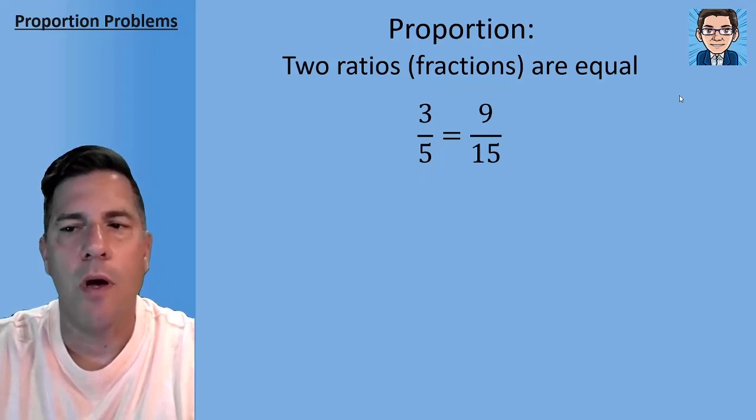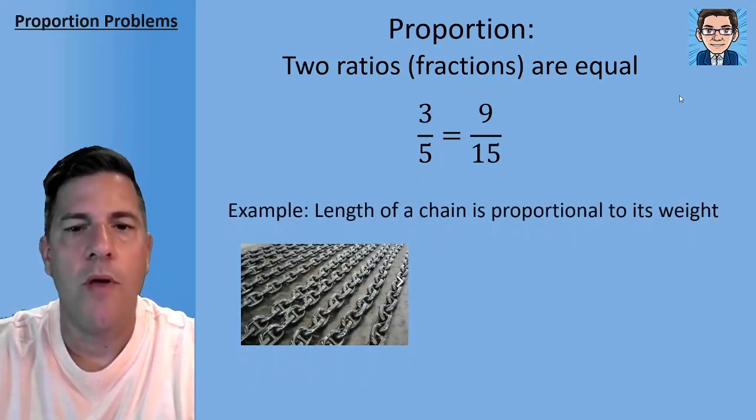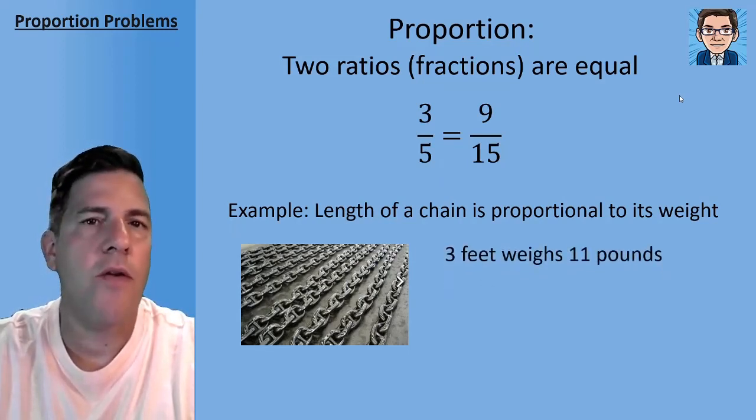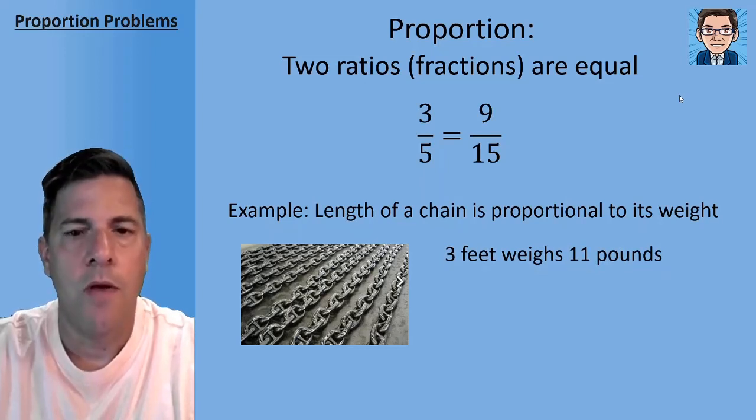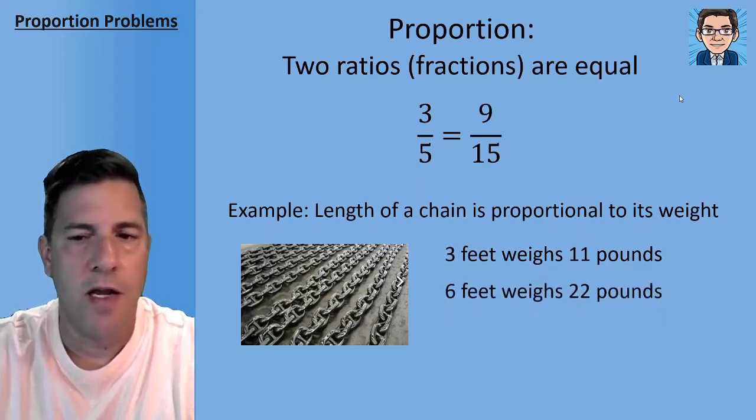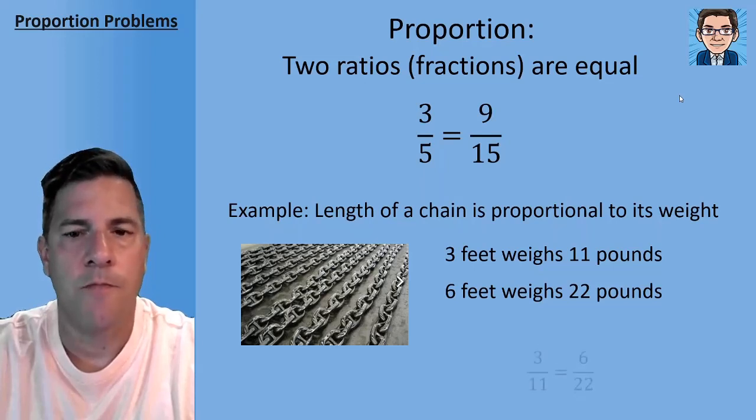So what's an example of a proportion? Well if we have a length of chain, we've got this big heavy chain, it's going to be proportional to its weight. So if we had three feet of the chain, it might weigh 11 pounds. If we had six feet of the chain, then it would weigh 22 pounds. And if you see that proportion, 3/11 equals 6/22.